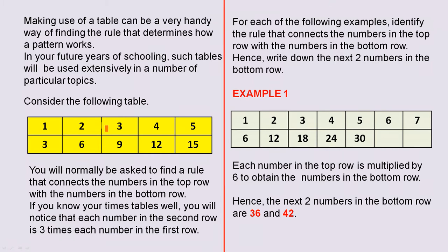In the top row we have 1, 2, 3, 4, 5. In the bottom row we have 3, 6, 9, 12 and 15. You will normally be asked to find a rule that connects the numbers in the top row with the numbers in the bottom row. If you know your times tables well, you will notice that each number in the second row is 3 times each number in the first row.